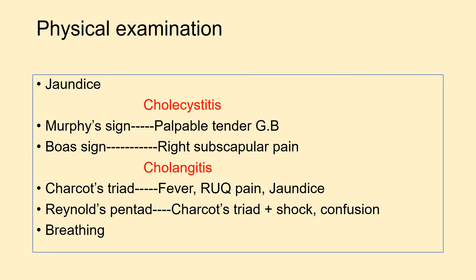In physical examination we have to look for jaundice. Cholecystitis presents with Murphy's sign and Boas sign — Murphy's sign is a palpable tender gallbladder, and Boas sign is right subscapular pain. Cholangitis presents with Charcot's triad and Reynolds' pentad. Charcot's triad is fever, right upper quadrant pain, and jaundice. When shock and confusion are also present, this is called Reynolds' pentad.